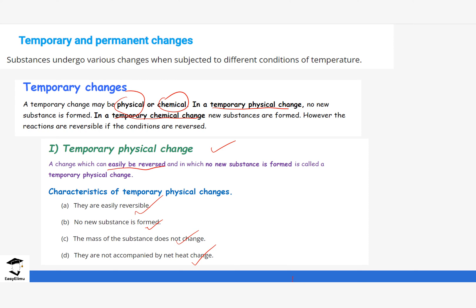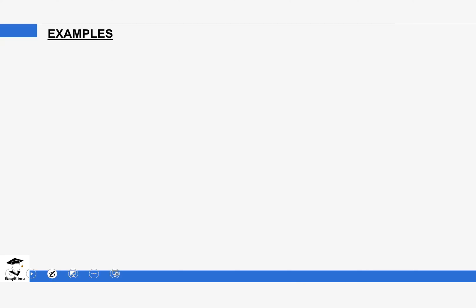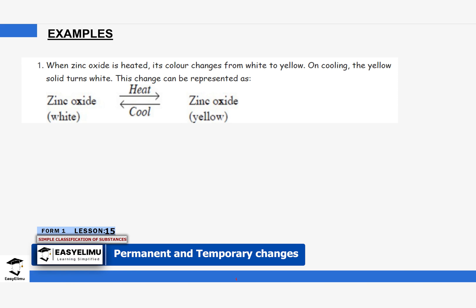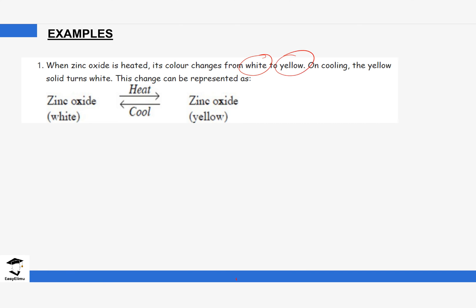An example of a temporary physical change is when zinc oxide is heated. The only change you see is a color change — it changes from white to yellow. It is white when cooled and turns yellow when heated, but the compound is still zinc oxide. When you cool it, the yellow color goes back to white. This is a good example of a temporary physical change.